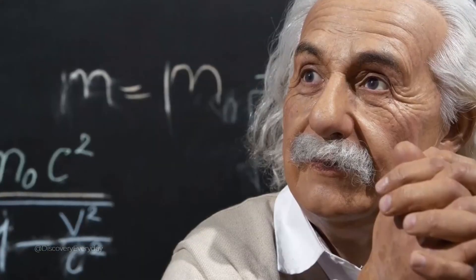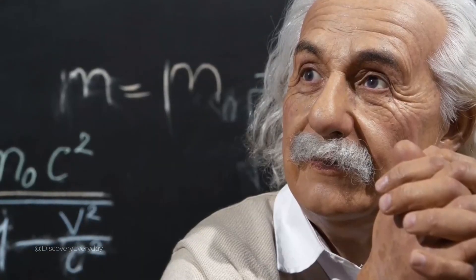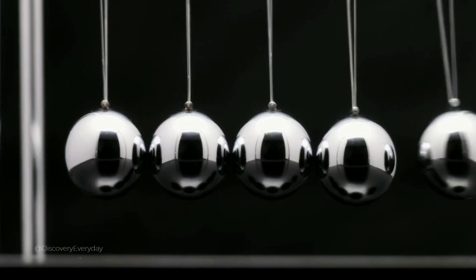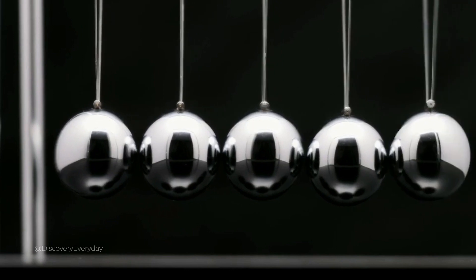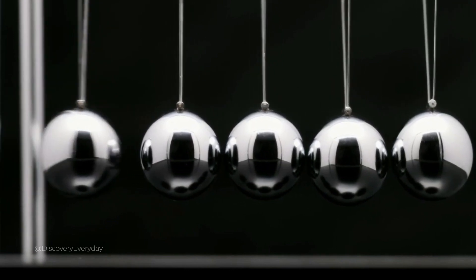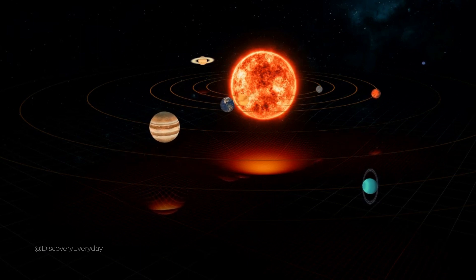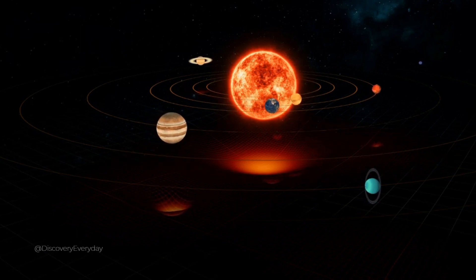Was Einstein wrong? Let's begin with another question: Was Isaac Newton wrong? His theory of gravity is accurate enough to fly spacecraft to the moon, but it breaks down at extremely high speeds or in very strong gravitational fields. That's where Einstein's theory of general relativity is a better alternative.